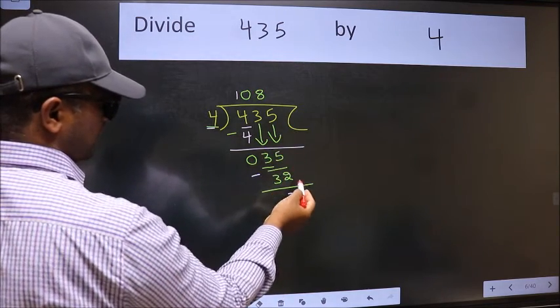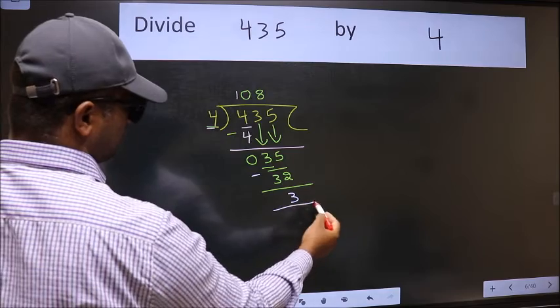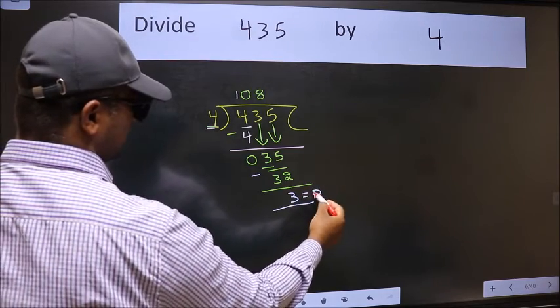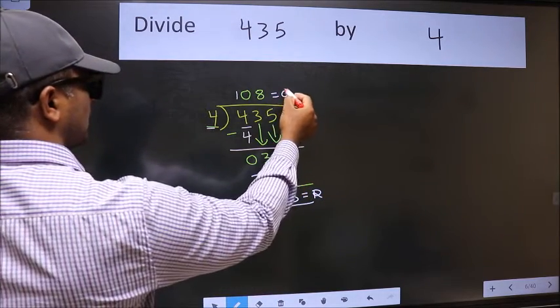No more numbers to bring it down, so we stop here. This is our remainder and this is our quotient.